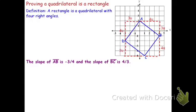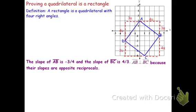For instance, if the slope of AB is negative 3 fourths, and the slope of BC is 4 thirds, I can conclude that AB is perpendicular to BC because the slopes are opposite reciprocals. Opposite reciprocal means you flip the fraction and change the sign. The negative 3 fourths flips to become 4 thirds, and the negative becomes positive. If those segments are perpendicular, then the angle that they form has a measure of 90 degrees.